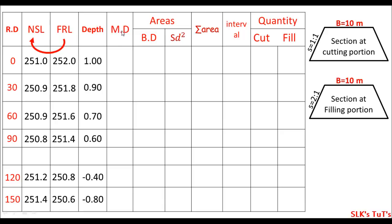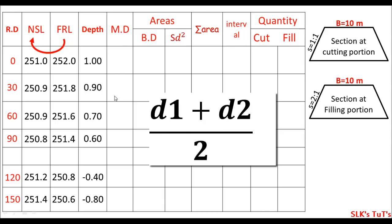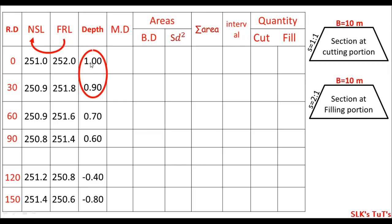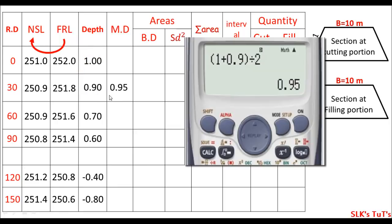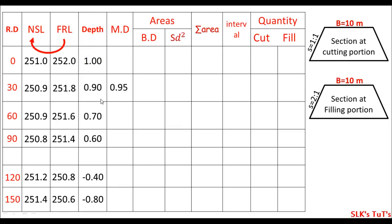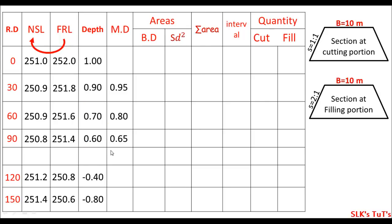Now I'll calculate the mean depths. MD represents mean depth. We add two consecutive depths and divide by 2. Like 1.0 plus 0.9 divided by 2 equals 0.95. And 0.9 plus 0.7 divided by 2 equals 0.8. And 0.7 plus 0.6 divided by 2 equals 0.65.